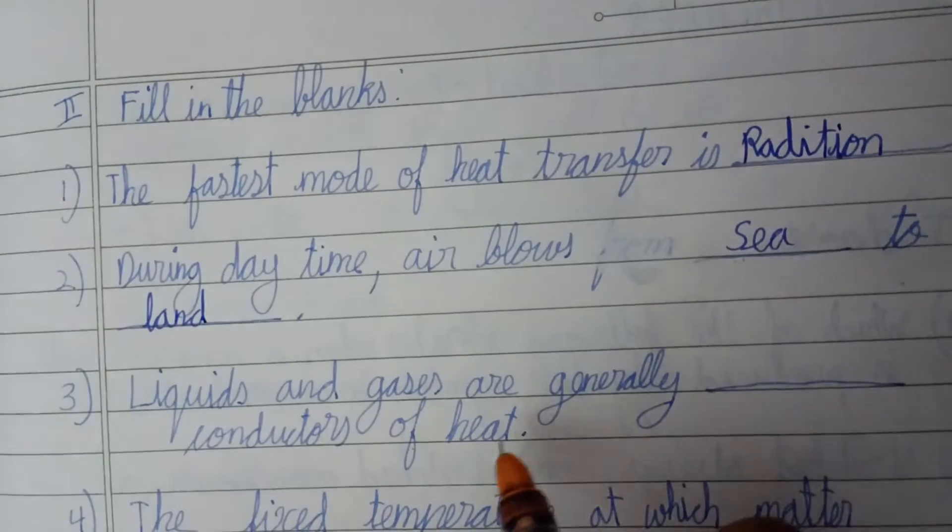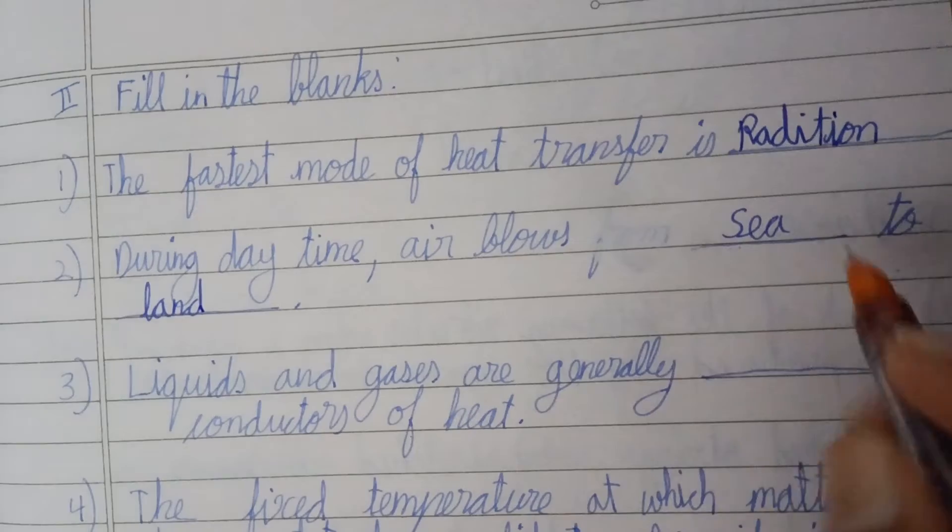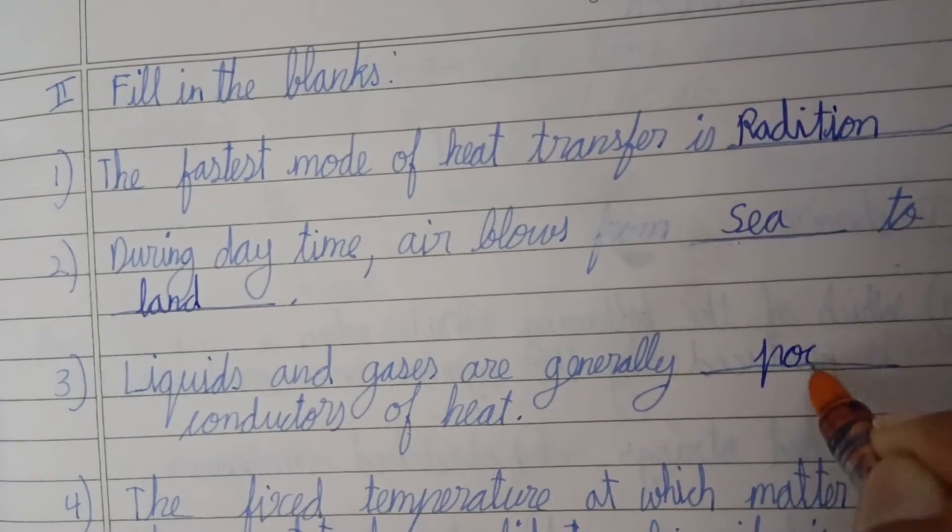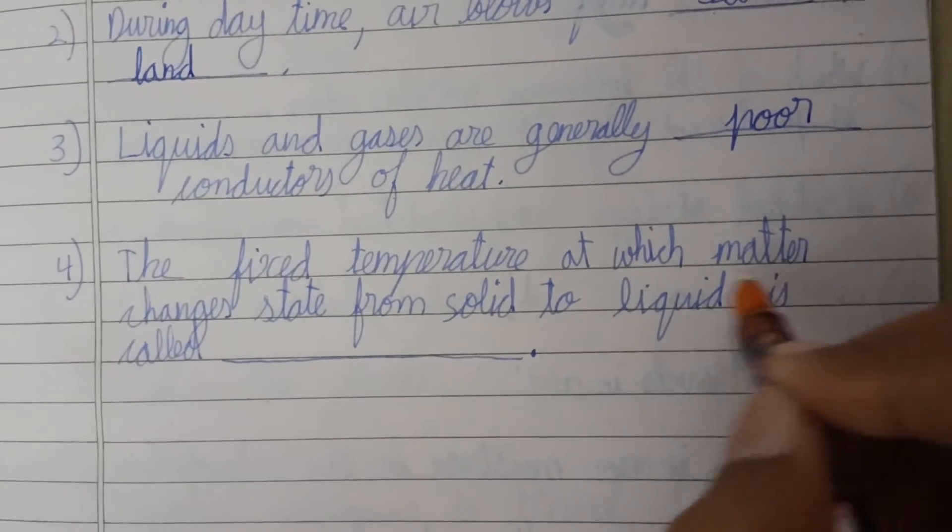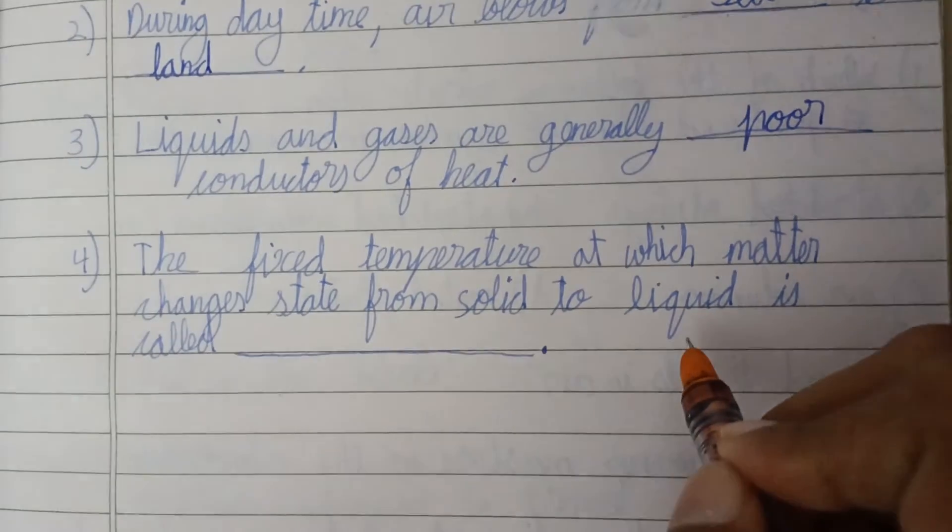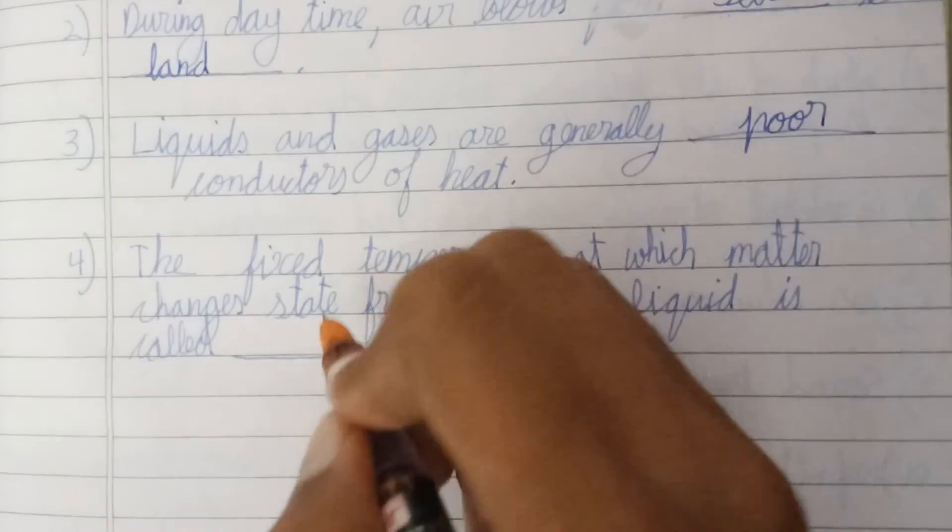Liquids and gases are generally poor conductors of heat. The fixed temperature at which matter changes state from solid to liquid is called melting point.